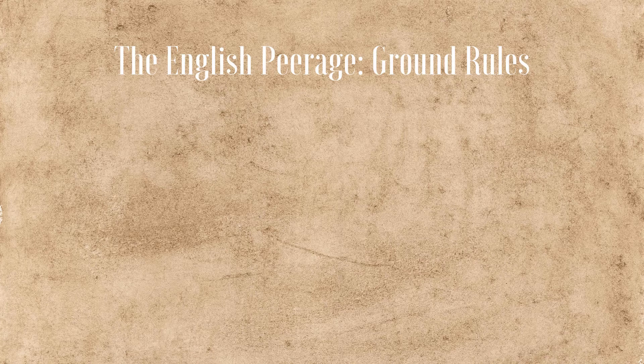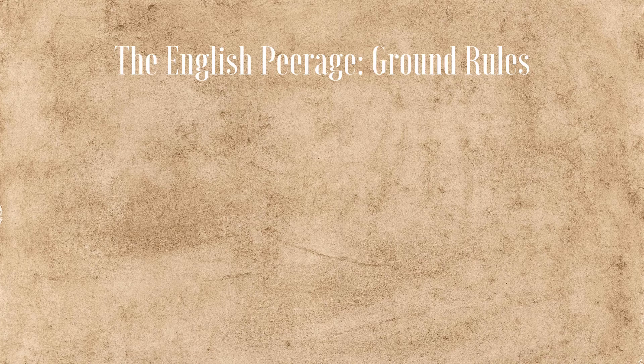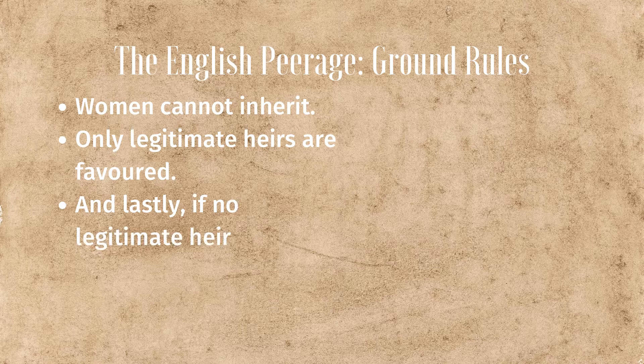Before we start, here are the ground rules of the peerage. First, women cannot inherit. Only legitimate heirs are favoured. And lastly, if no legitimate heirs are present, the title becomes extinct.